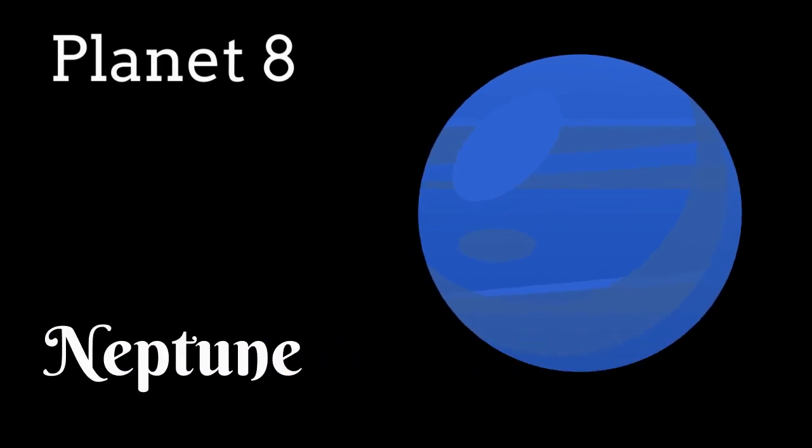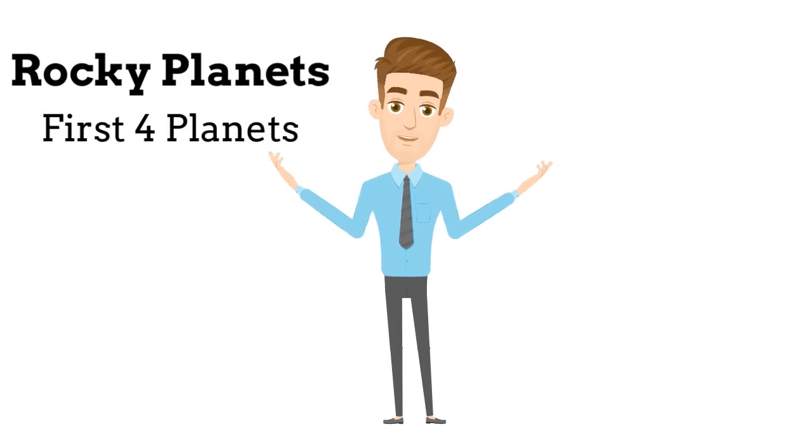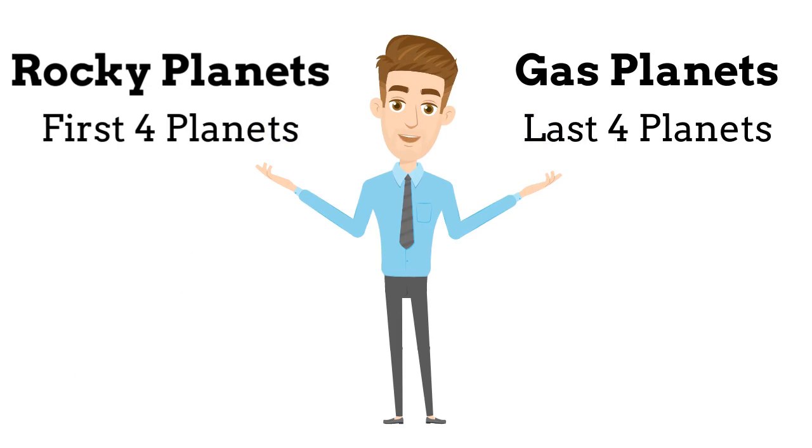The next and final planet is Neptune, which is a gas planet. So that means, their first 4 planets are rocky planets, and last 4 planets are gas planets. So 8th planet is Neptune, which is farthest from Sun.